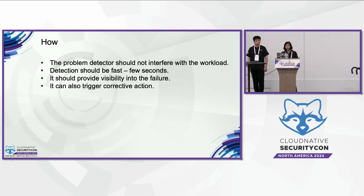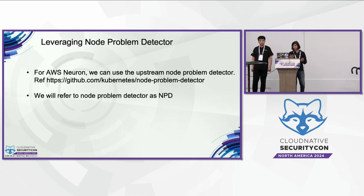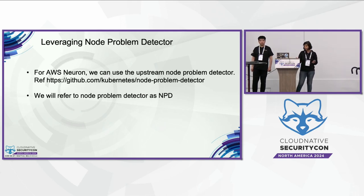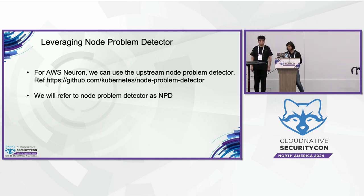Optionally, problem detection can also trigger a remediation action. As we started exploring solutions, an upstream component already popular in Kubernetes emerged as a suitable candidate: the node problem detector, which we will refer to as NPD for the rest of the slides. We are going to see a case study of using the upstream node problem detector to catch these errors.